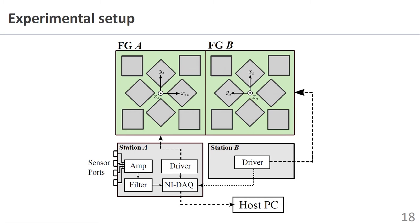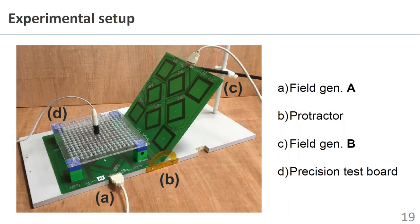Here is a diagram of the experimental setup of field generators A and B. A total of two control stations are required to power each individual field generator. Control station B is slaved to station A, which is controlled by a host computer which executes the sensor tracking software.